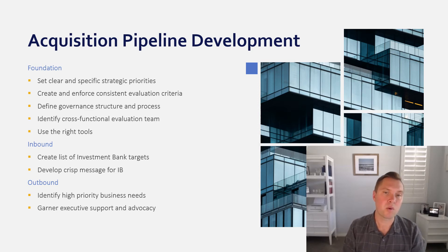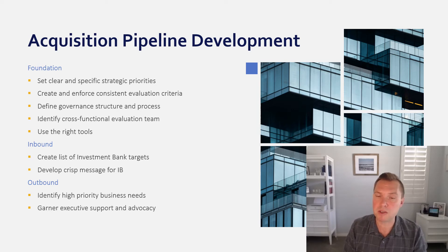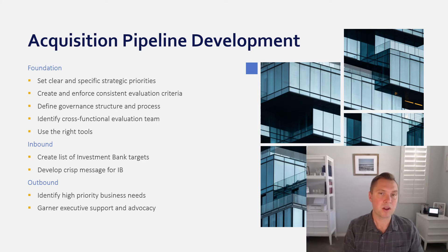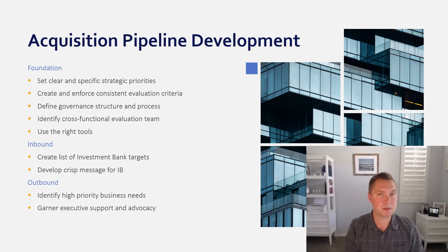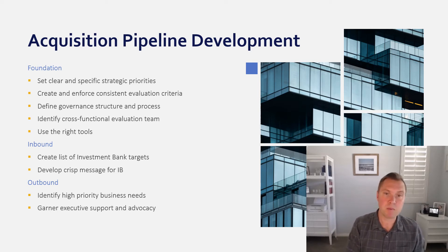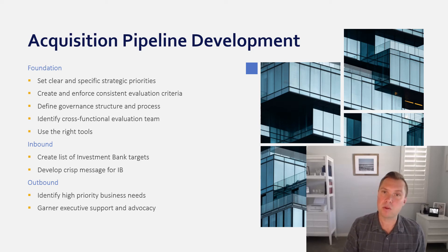Once you have the foundational concepts down, let's talk about inbound first. You need to think through how you're going to develop inbound activity — this is about developing relationships with investment bankers. Before you begin an outreach campaign, identify those investment banks that are most likely to represent the types of companies you're going to be interested in. Not all investment banks represent all types of sellers in all industries. Identify 10 to 20 investment banks that have represented sellers in your space or similar types of companies.